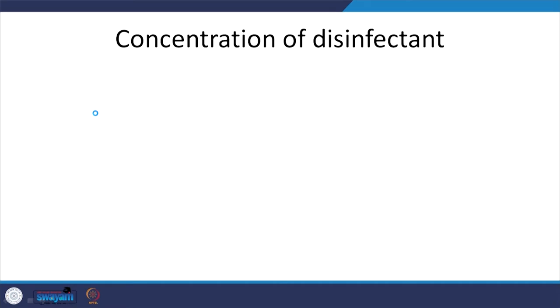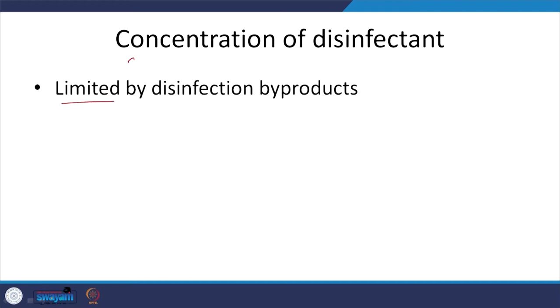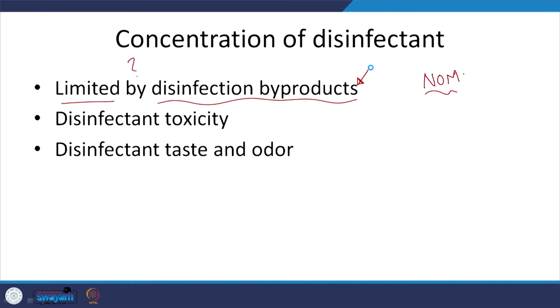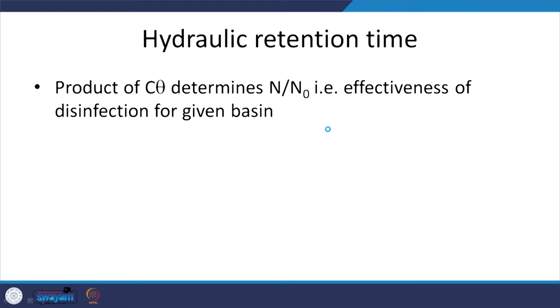The primary variable is the concentration of the disinfectant — it should not be too high, because then it will react with NOM and form harmful disinfection byproducts. The disinfectant itself may be toxic at high concentrations and can lead to odour and taste problems — as sometimes seen in India when high chlorine is added at the treatment plant. The retention time also plays a role.